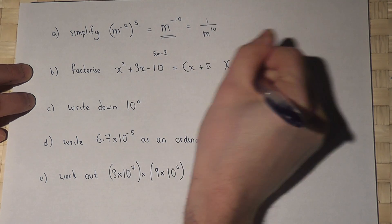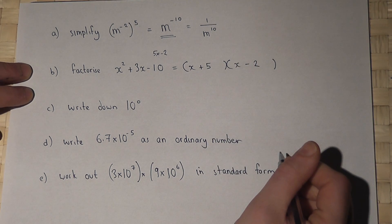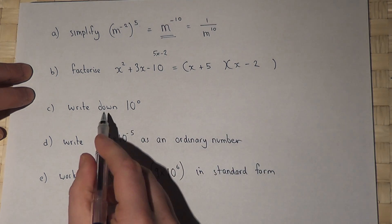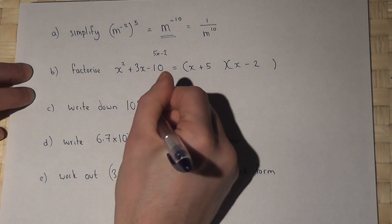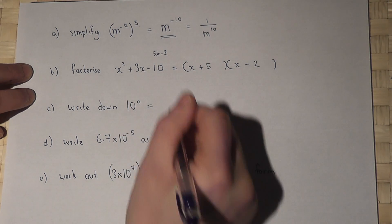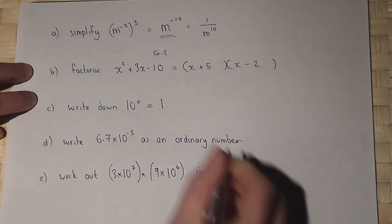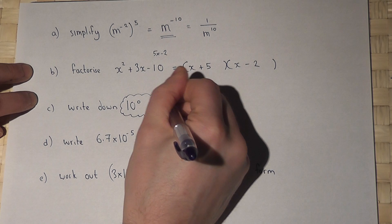In part c, I need to write down ten to the power of zero. Now this is a hard and fast rule: anything to the power of zero is always one, so it's worth memorizing that for the future.